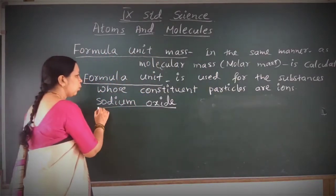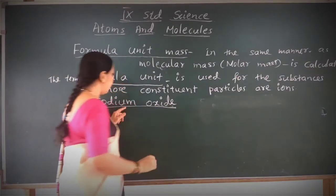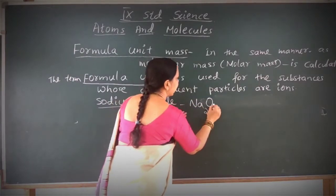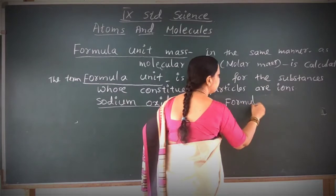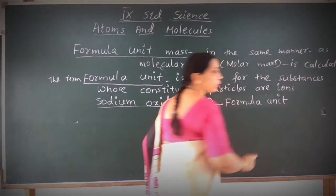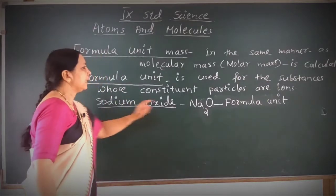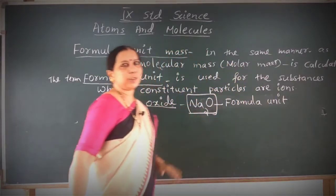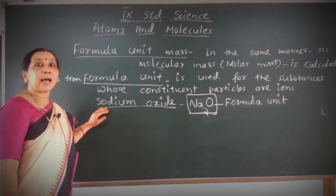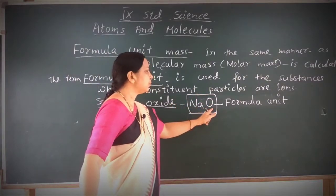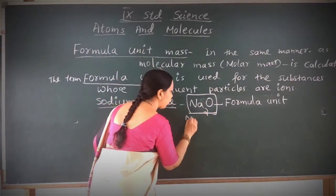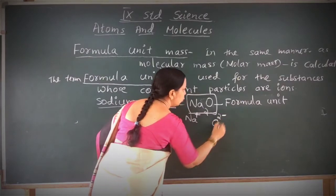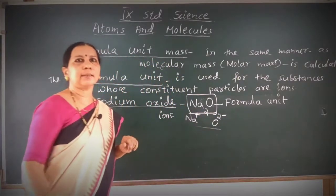What is the formula of sodium oxide? It is Na₂O. This is the formula unit of sodium oxide. Na₂O is the formula unit of sodium oxide, and it contains ions Na⁺ and O²⁻. These are the ions in the compound.